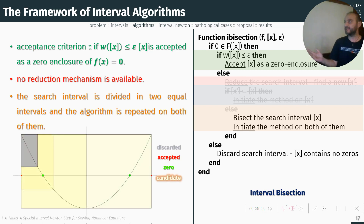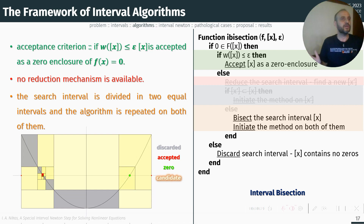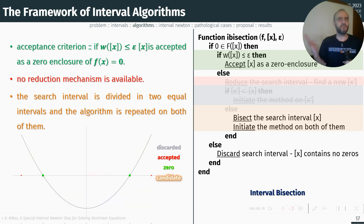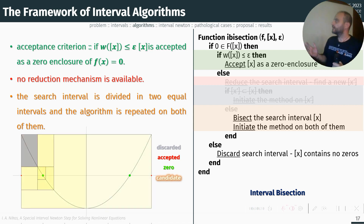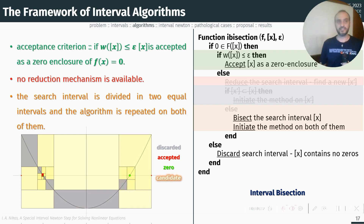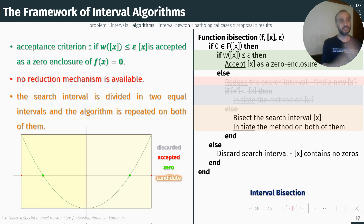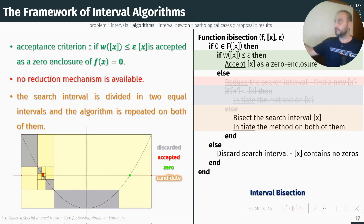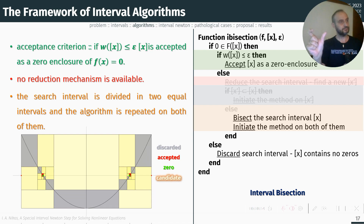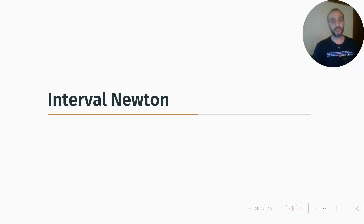The simplest method is interval bisection — we assume no reduction mechanism exists, so we simply bisect the search interval. As shown in the animation, the initial search interval is bisected again and again until either the termination criterion is met or the interval is discarded, finally resulting in small red intervals containing the zero of f.